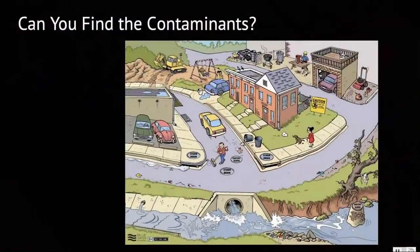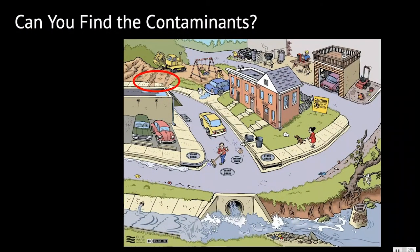I spy some loose dirt that can wash into the street and then into a storm drain, going right into the river. Dirt clogs the gills of aquatic organisms, makes it hard for them to see, and can transport contaminants like oil and grease. Someone's washing their car — that soap and grease goes right into our rivers and oceans.